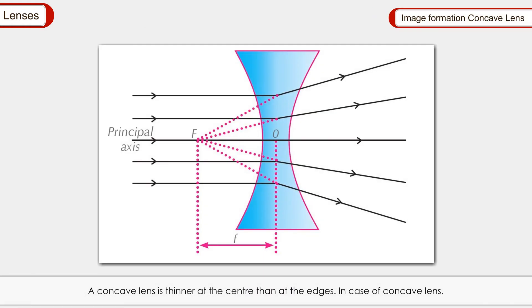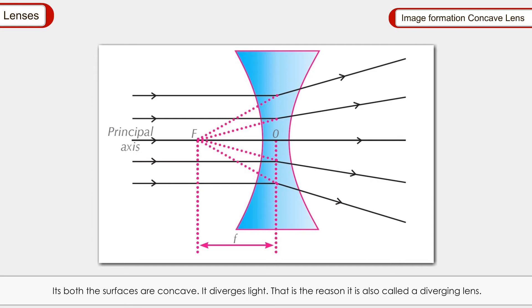Image formation by a concave lens: A concave lens is thicker at the centre than at the edges and both surfaces are concave. The image formed is always erect, virtual, and smaller than the object. A concave lens does not form a real image. It diverges light, which is why it is also called a diverging lens.